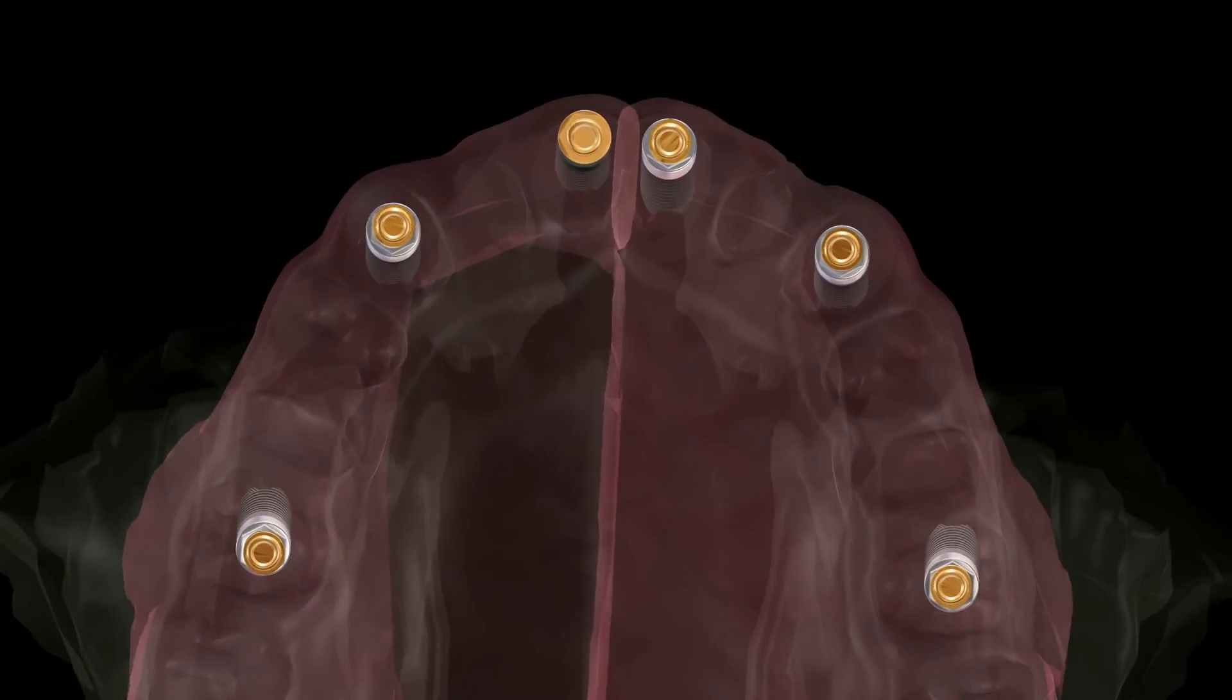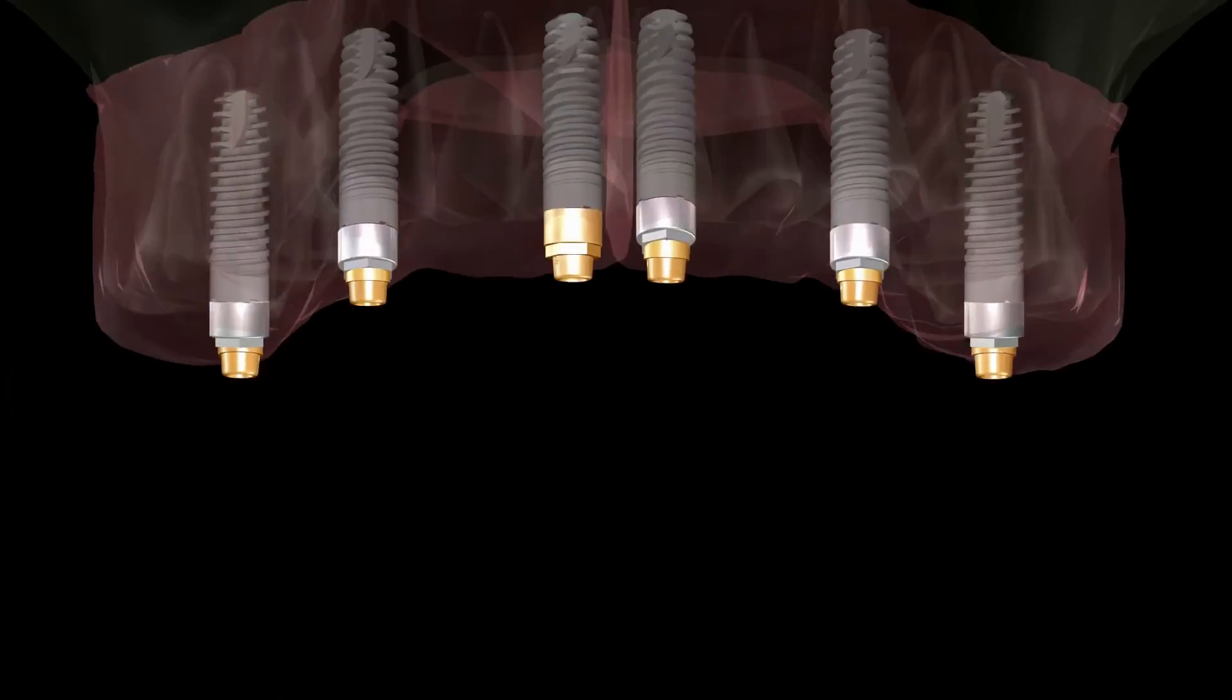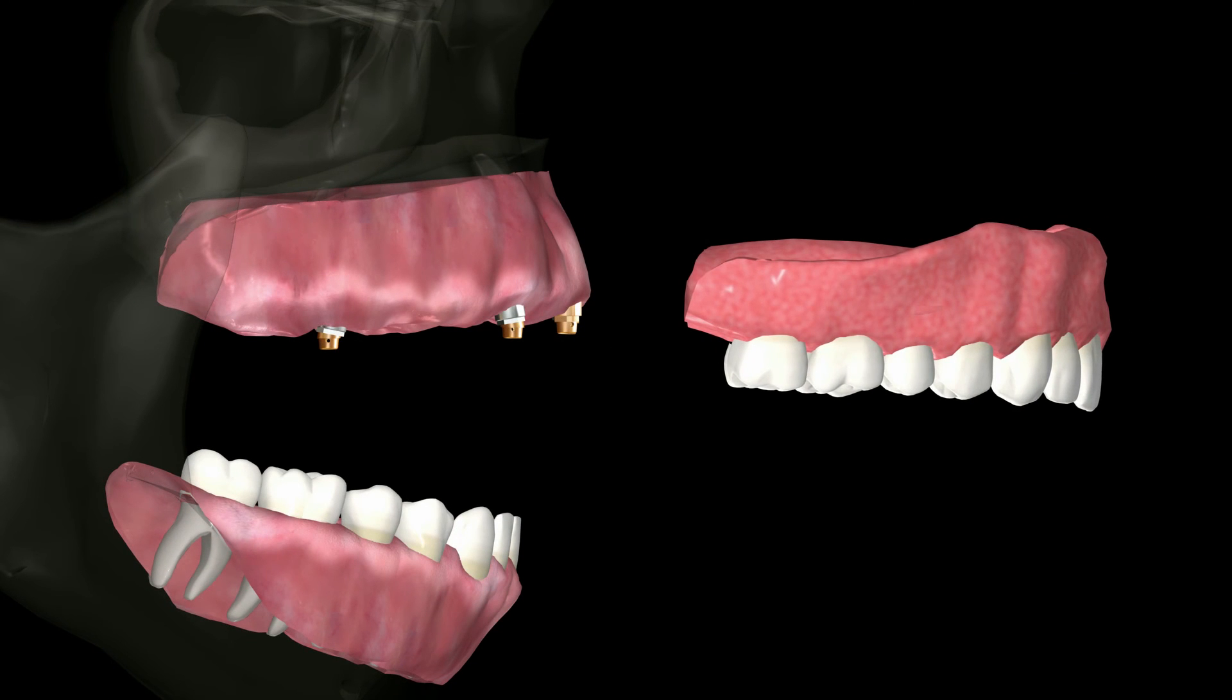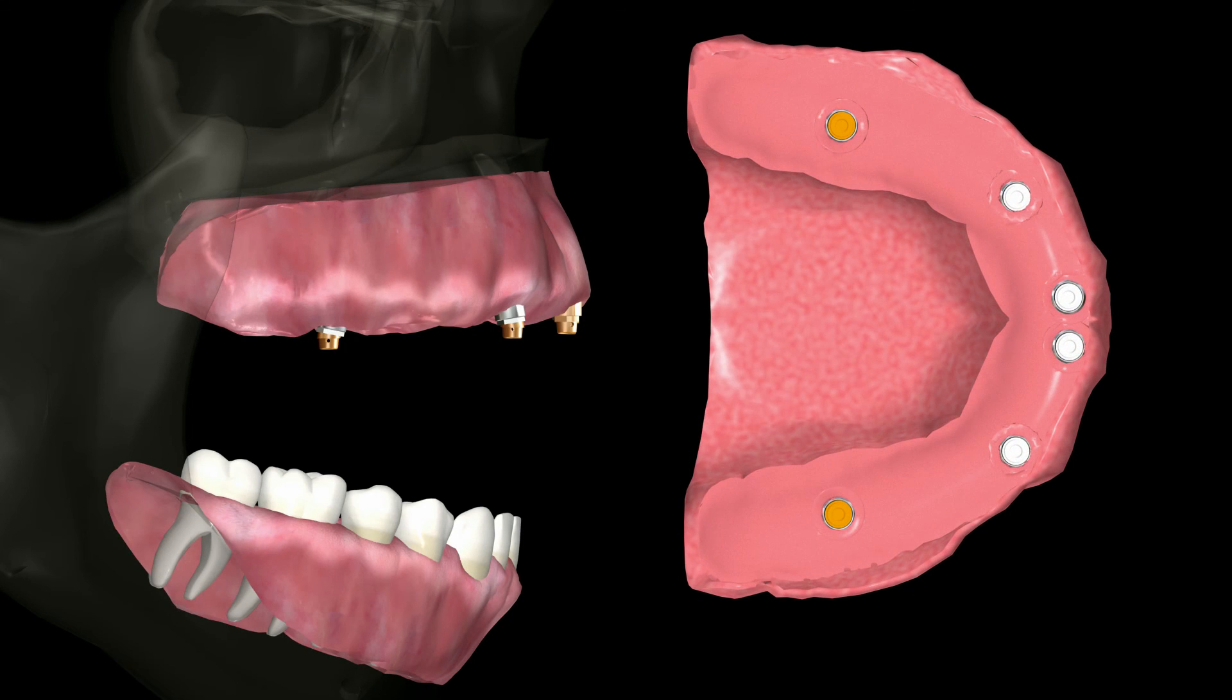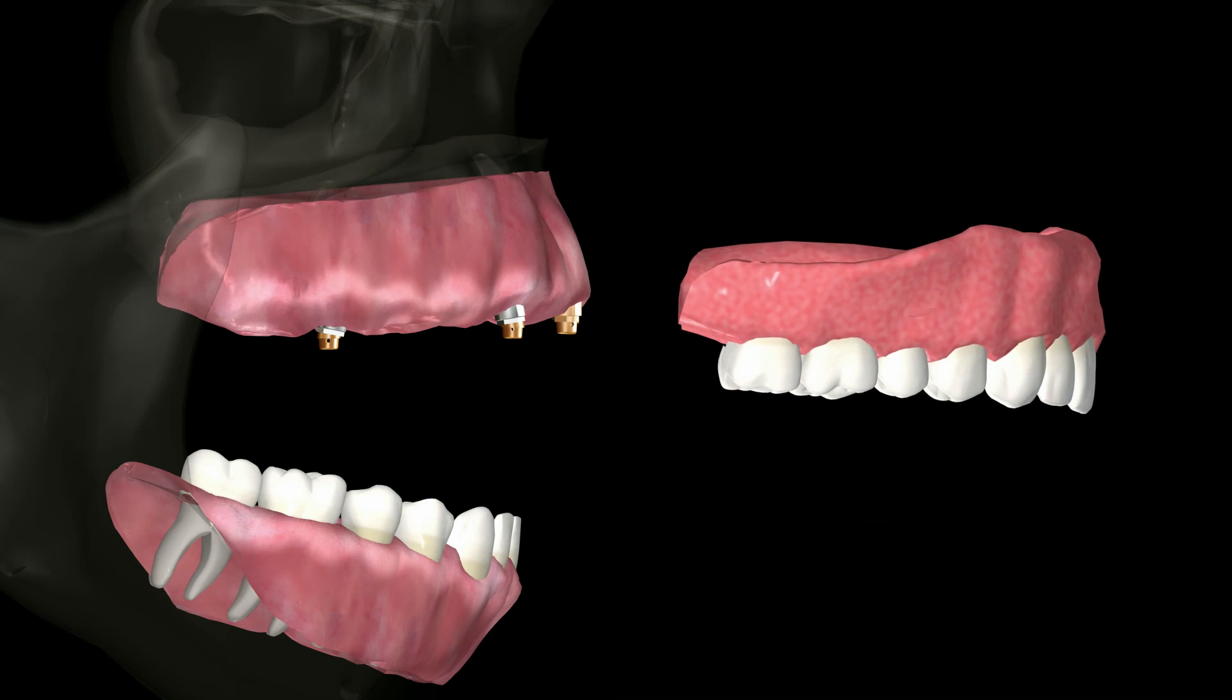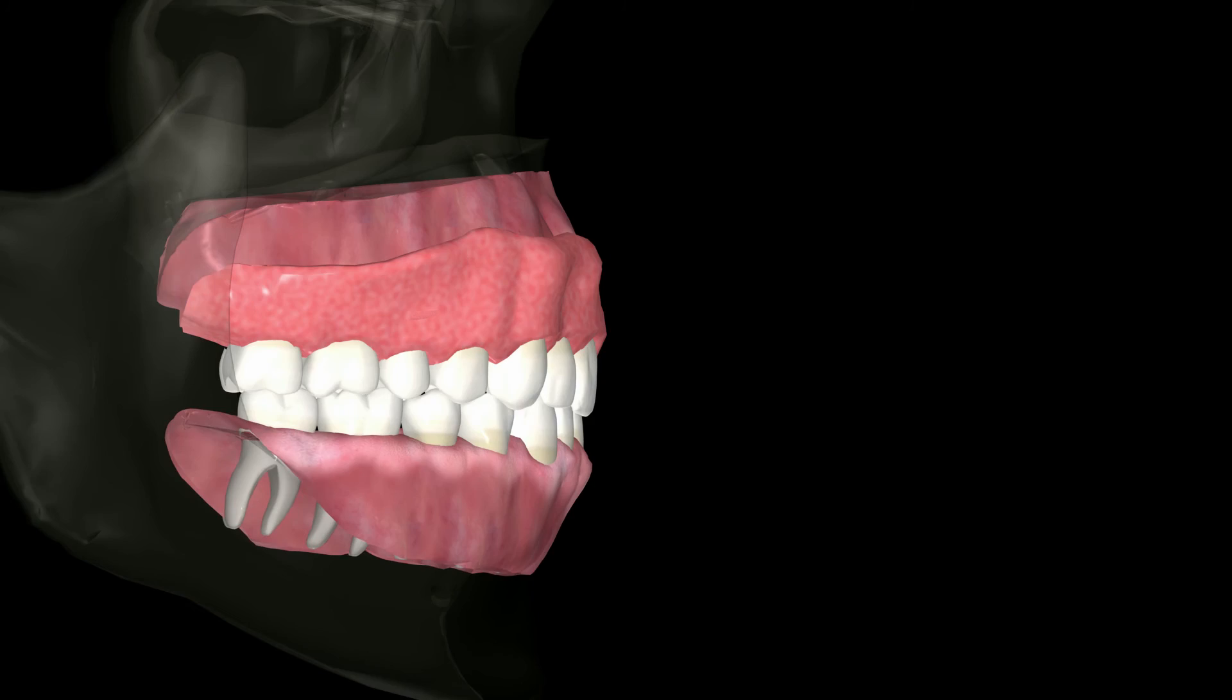After the black ERA males are processed into the denture, they are then replaced with the white or orange nylon inserts. This change from the black processing nylon to the white or orange nylon activates 0.4 millimeters of space between the males and females. This allows true vertical resiliency. Thank you from the Sterngold Company.